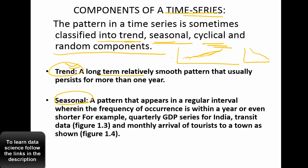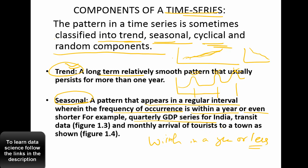Seasonality is a pattern that appears at regular intervals where the frequency of occurrences is within a year or even shorter — for example, quarterly GDP or sales data. If you use sales data, every December there is a peak because it's the holiday season. Sales for most consumer or e-commerce companies spike during festival months. We call this seasonal data — it happens in a particular season and repeats within a year or less. If it happens over more than one year, by definition it is not seasonal.